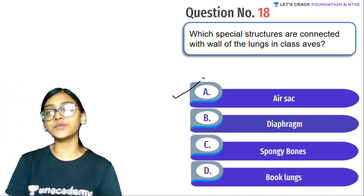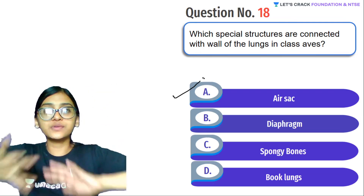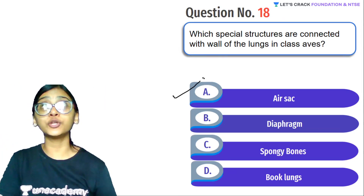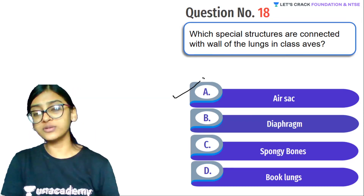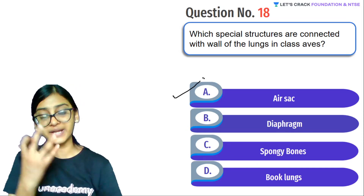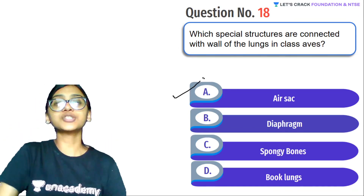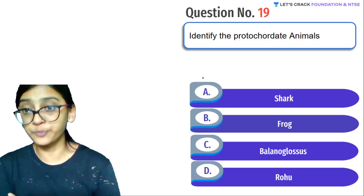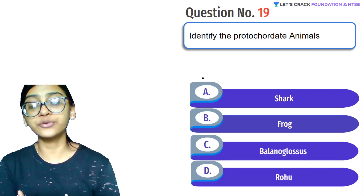Spongy bones — or pneumatic bones — are also present in birds. These are hollow bones that reduce the density and overall body weight of birds. But pneumatic bones are not directly related to the lungs. Air sac is the correct answer for the question about structures connected with the walls of the lungs.